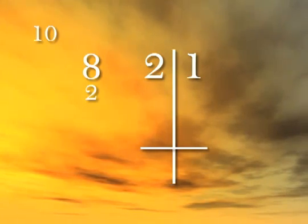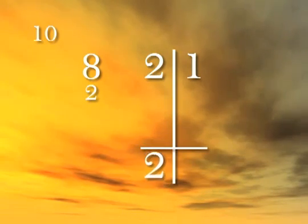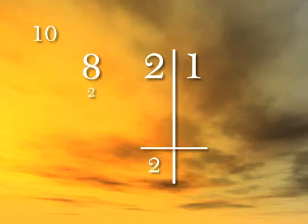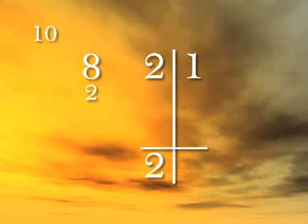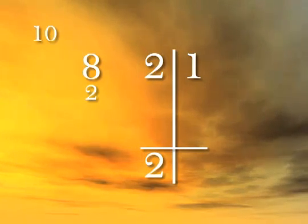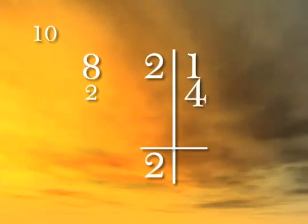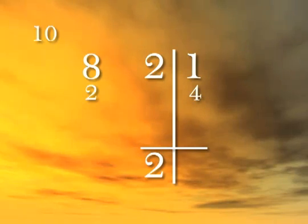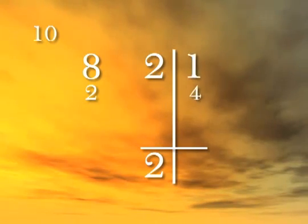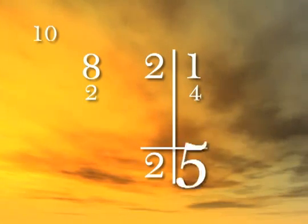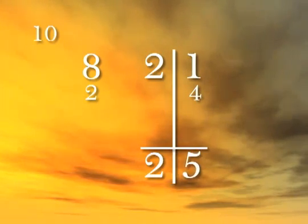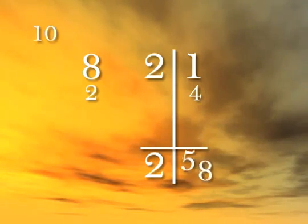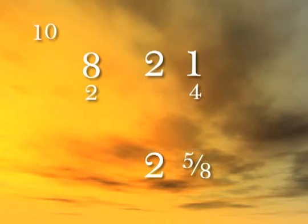Bring down the first digit, two. Two times two is four — write the four in the next column. Adding the next column, one plus four is five, so five is our remainder. The answer is two and five eighths.